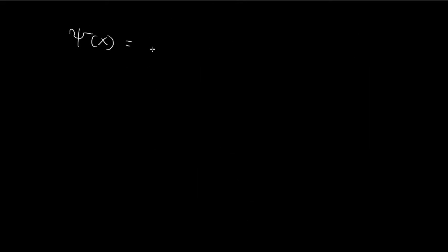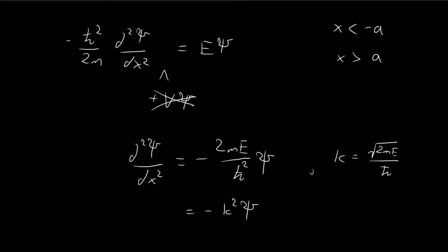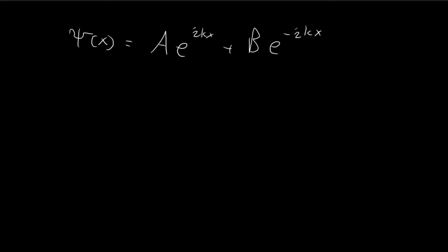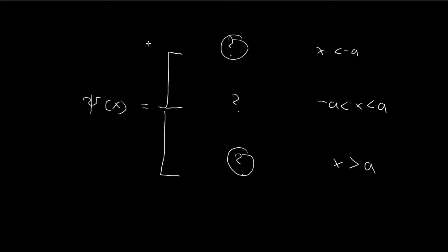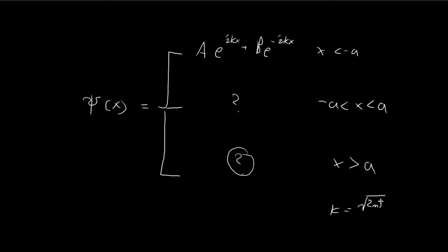The solution ψ of x is equal to some constant A times e to the power of ikx, plus B times e to the power of negative ikx. Assuming familiarity with this solution, for the region where x is smaller than negative a, we get: ψ = Ae^(ikx) + Be^(-ikx), where k equals the square root of 2mE divided by ħ.